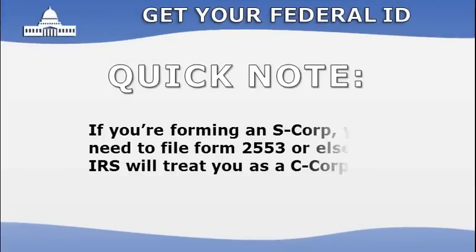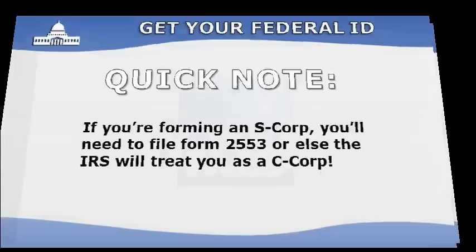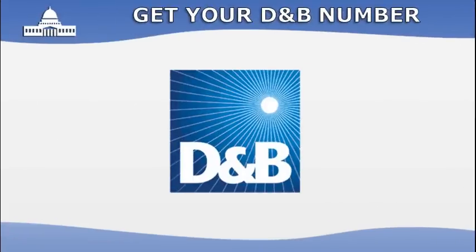Quick note: if you have chosen to form an S-Corp, print out Form 2553 during the application process. You will need to complete this and send it to the IRS in a timely manner, or your corporation will automatically be treated as a C-Corp.